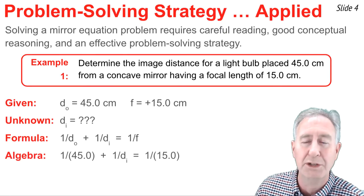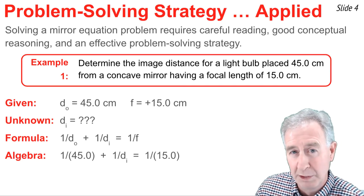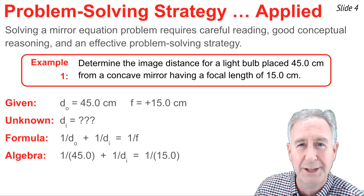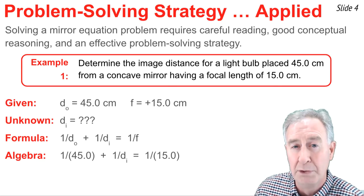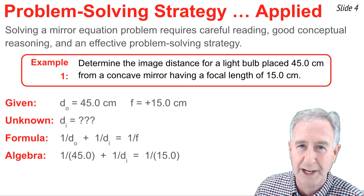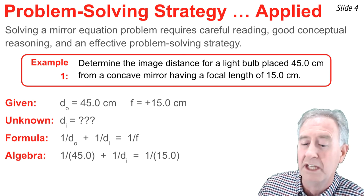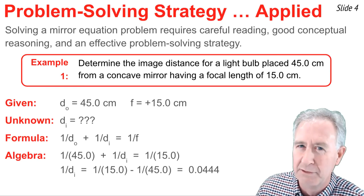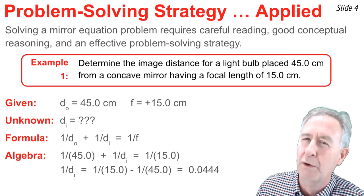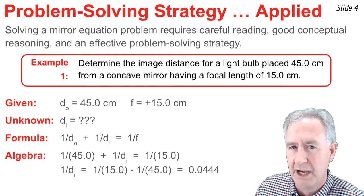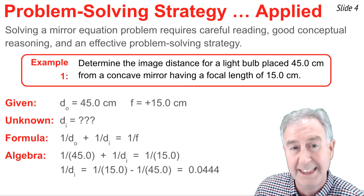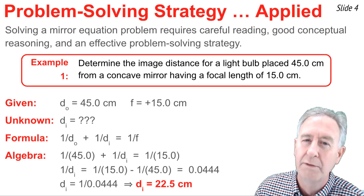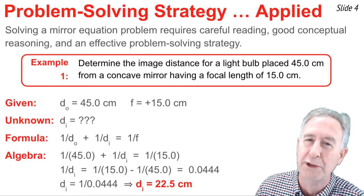So I say 1 over 45 plus 1 over d_i equal 1 over 15. And I want to solve for d_i. So I have to isolate that d_i term by itself on one side of the equation. So I do that by subtracting 1 over 45 from both sides. That gives me just 1 over d_i on the left side of this equation. And it gives me 1 over 15 minus 1 over 45 on the opposite side. Now I pull out my calculator and I ask it, what is 1 over 15 minus 1 over 45? And it says 0.0444. Now, that's 1 over d_i. That's not the answer. It's 1 over the answer. So to find d_i, the image distance, I take the reciprocal of each side, which would give me d_i equal 1 over 0.0444, on my calculator, it tells me that's 22.5 centimeters.